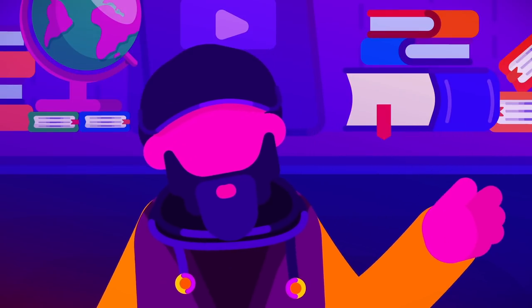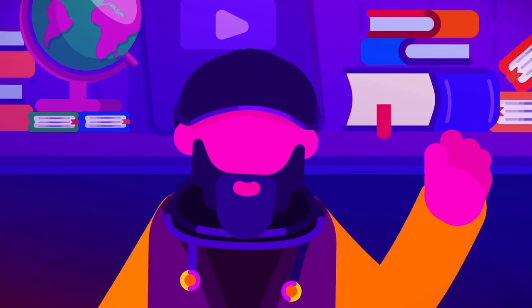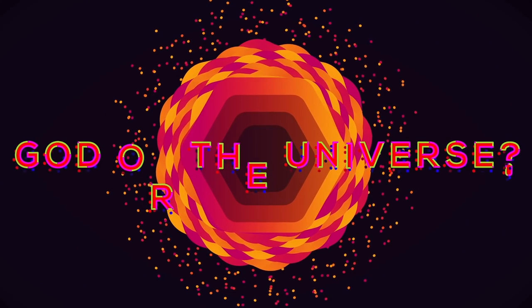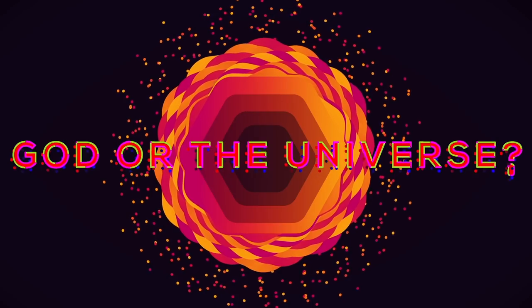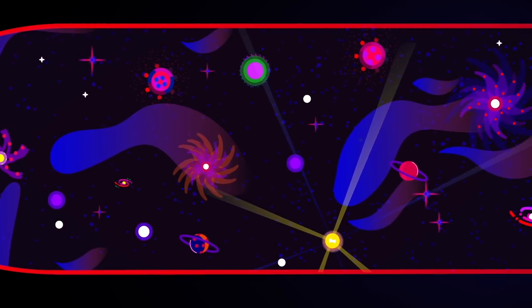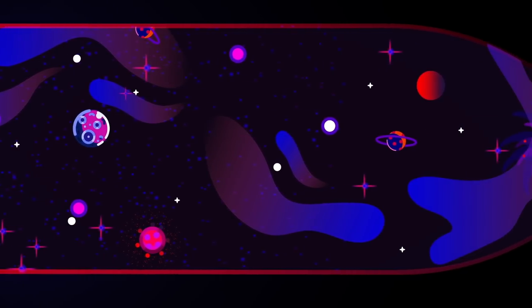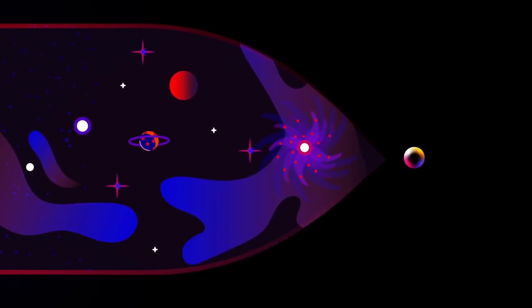What we're essentially saying is that something must have always existed. Now there are two obvious choices: God or the universe. Since the universe began and is contingent, it cannot have always been there. Therefore something that always existed must be God.